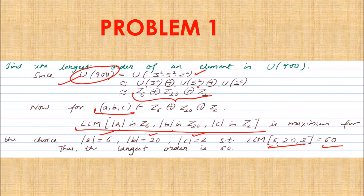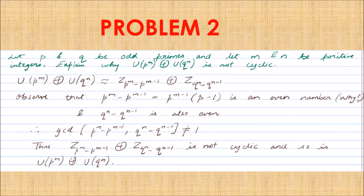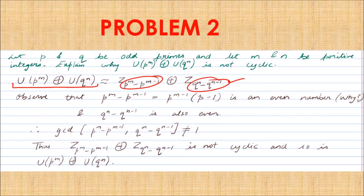Problem 2: Let p and q be odd primes and m, n positive integers. Explain why U(p^m) × U(q^n) is not a cyclic group. Using the remark for odd primes, this group is isomorphic to Z_{p^m − p^{m−1}} × Z_{q^n − q^{n−1}}. Taking p^{m−1} common from the first suffix leaves (p − 1), and since p is an odd prime, (p − 1) is even, so the entire first suffix p^m − p^{m−1} is even.